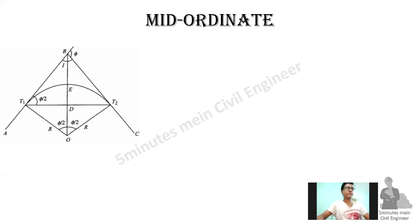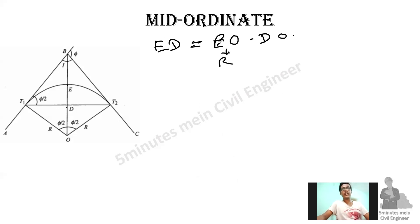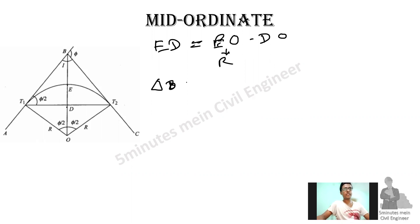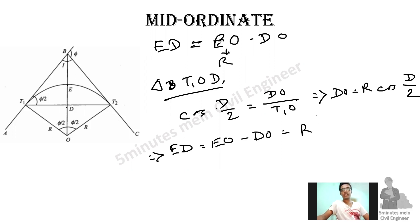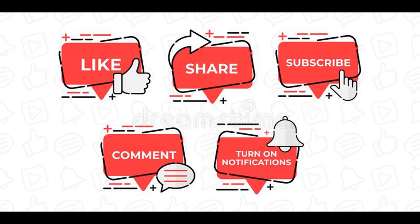This is the mid-ordinate. The mid-ordinate ED equals EO minus DO. EO equals R. In triangle BT1OD, cos(D/2) equals DO divided by T1O, so DO equals R times cos(D/2). Therefore, ED equals R minus R cos(D/2), giving the formula: ED equals R times (1 minus cos(D/2)).